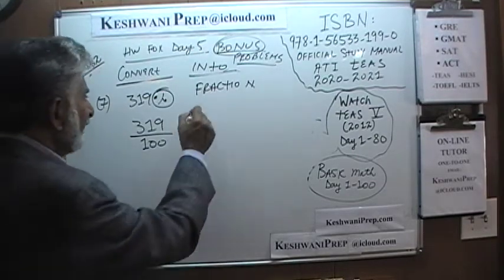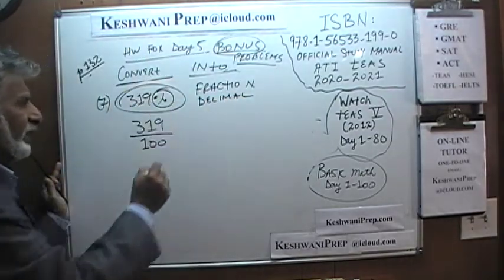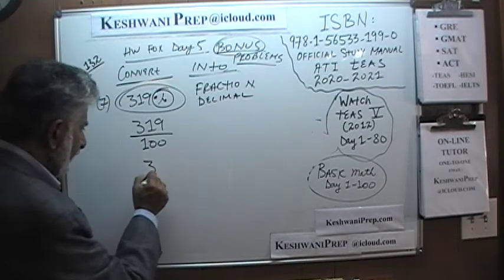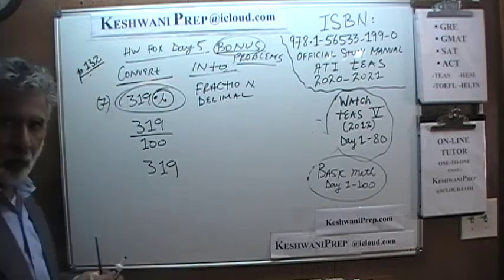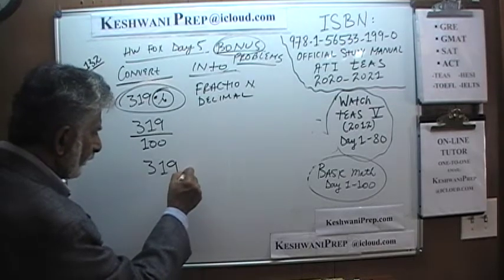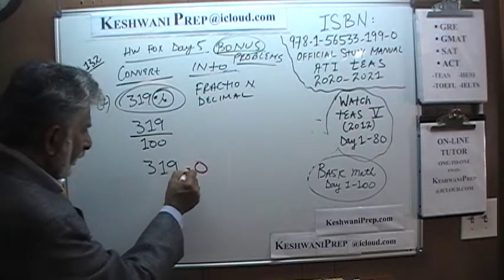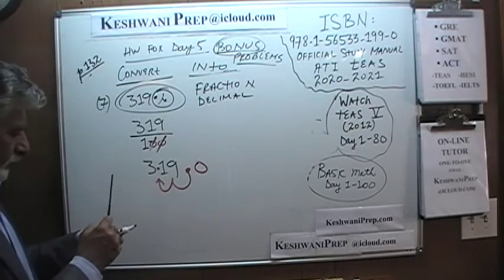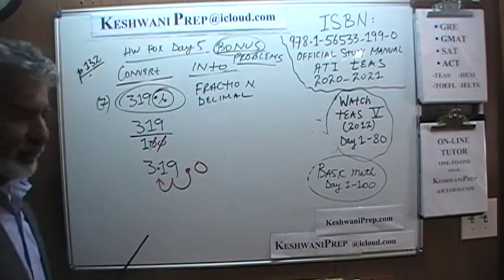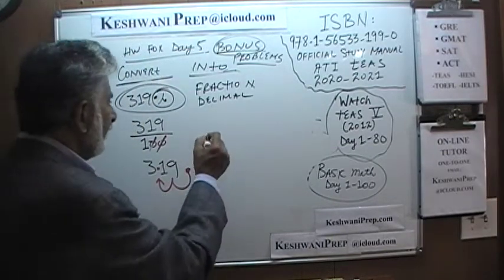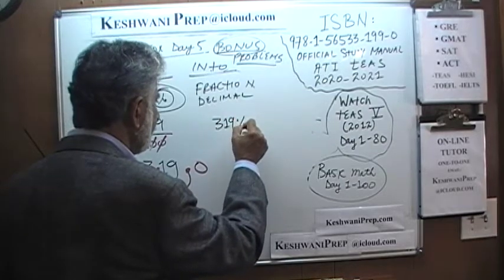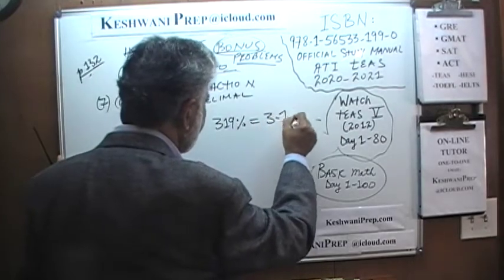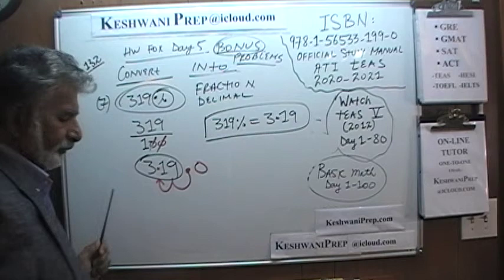If they ask us to convert 319% into decimal, we go one more step and divide 319 by 100. We write out 319, look at the decimal point, and since we are dividing by 100 — two zeros — we move it two spots to the left. Therefore, 319% expressed as a decimal is 3.19. That was number 7.